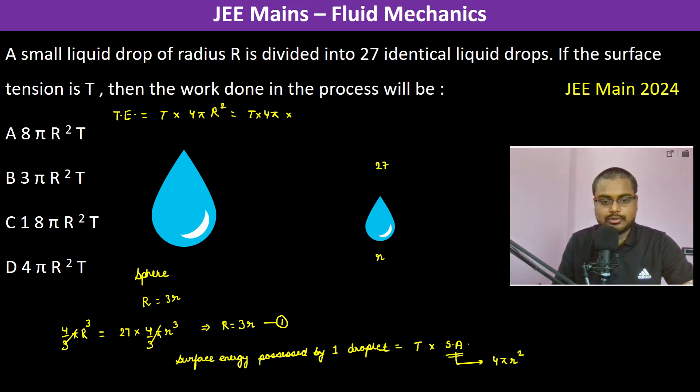Now for each droplet, the total energy is T into 4 pi small r whole square. But there are 27 droplets, so therefore the total energy will be multiplied by 27. This becomes 54, 108 pi r square into T.